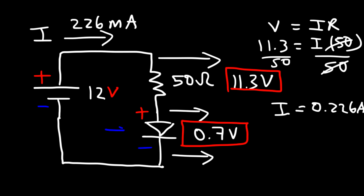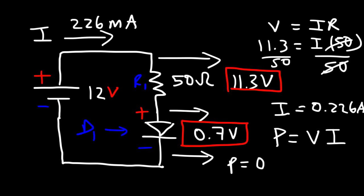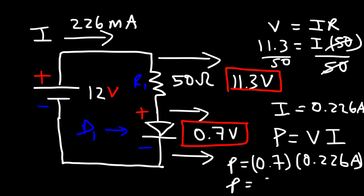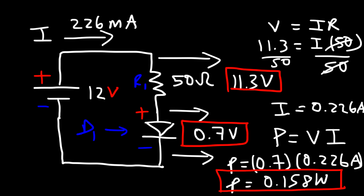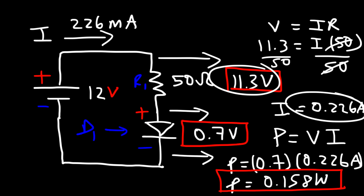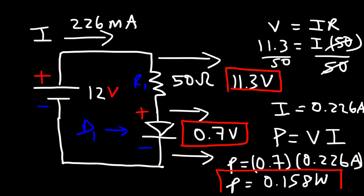Now how much power is being consumed by the diode? Power equals voltage times current, so it's 0.7 times 0.226, which gives about 0.158 watts. The power consumed by the resistor is 11.3 times 0.226, which is about 2.554 watts.